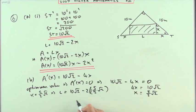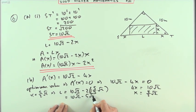I'll put that down anyway: 10 root 2 minus 5 root 2, which is 5 root 2.